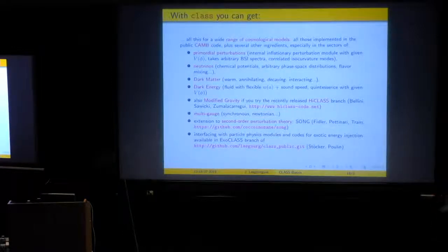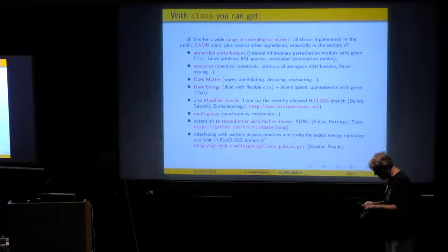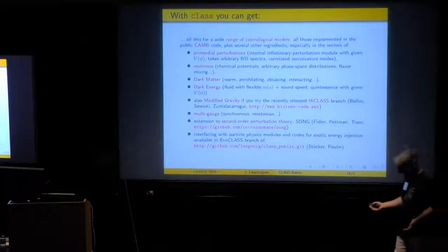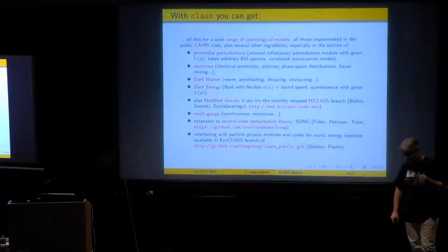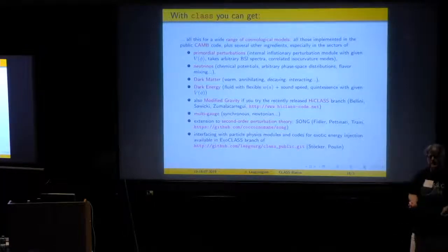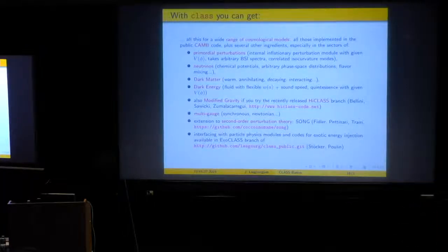Extension is really a minimization of it, because it's a huge extension. And this is a code SONG that Christian has developed with Guido Pettinari and Thomas Tram, and that he will explain this afternoon and tomorrow. And there are other branches of CLASS which are specialized in different things. This ExoCLASS is specialized in exotic energy injection mechanisms. There is a version called CLASS SZ of Boris Bolliet, which is specialized in predicting Sunyaev-Zeldovich observables. The ExoCLASS is from Patrick Stöcker and Vivian Poulin. So progressively, when there is a branch like this, which is very well tested and efficient, we tend to merge these branches with a main CLASS.